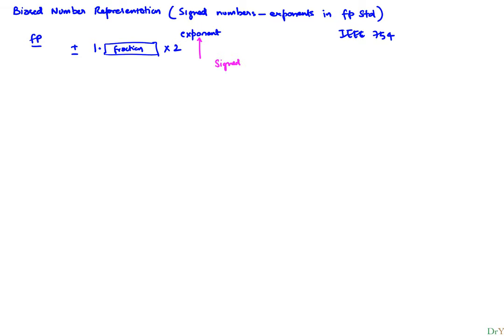Since the exponent is a signed number, the intuitive thing is to represent it using a signed number format. The practical alternatives are either signed two's complement or a new format we're introducing here, called the biased exponent format.